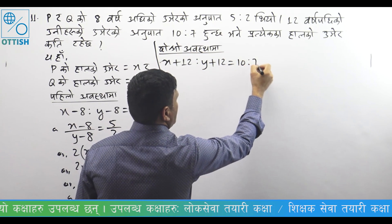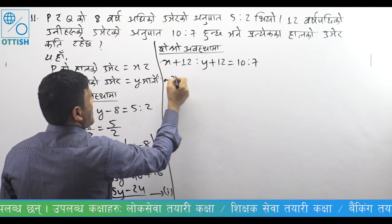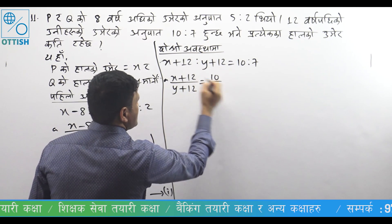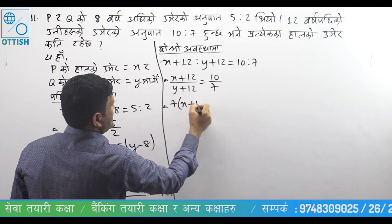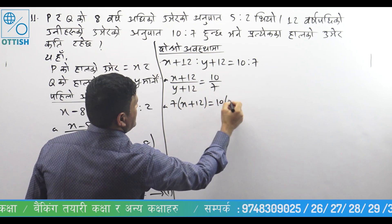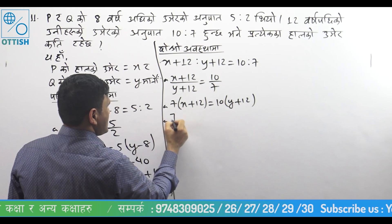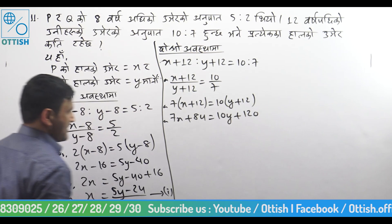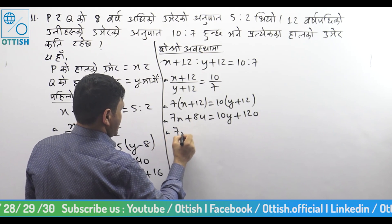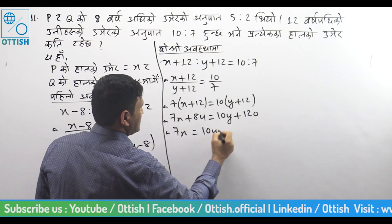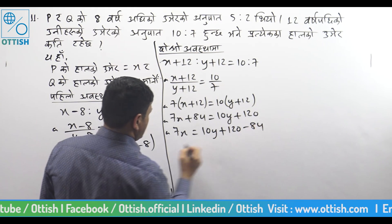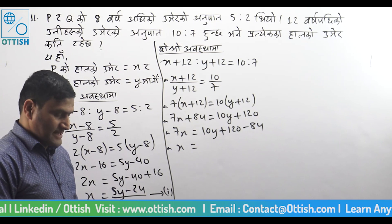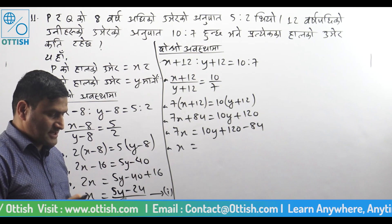10 is to 7, so X plus 12 upon Y plus 12 is equal to 10 upon 7. Cross multiply: 7 times X plus 12 is equal to 10 times Y plus 12, giving 7X plus 84 equal to 10Y plus 120.